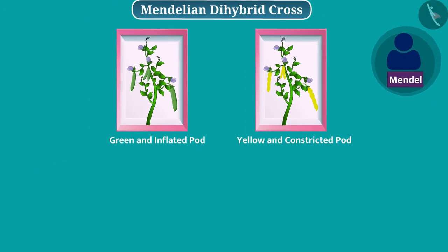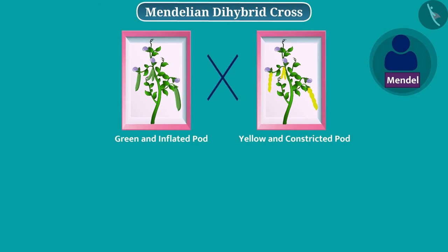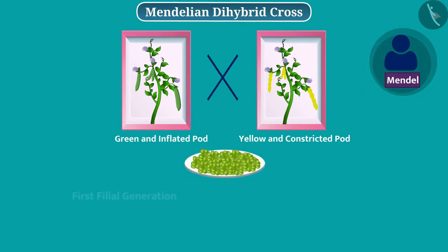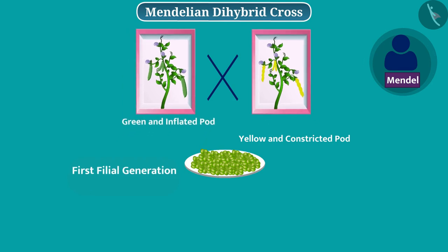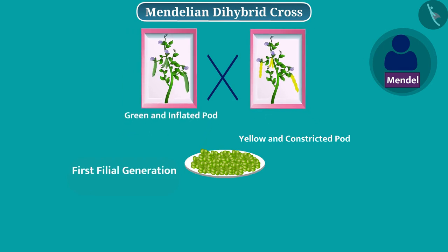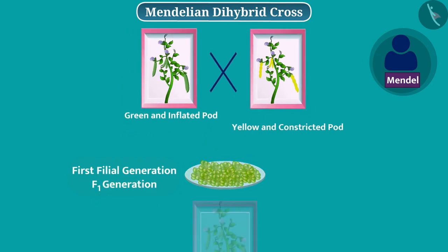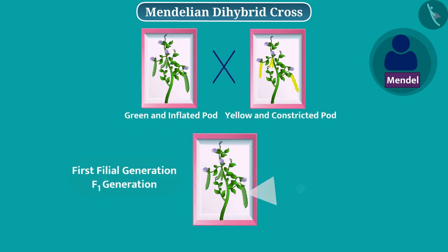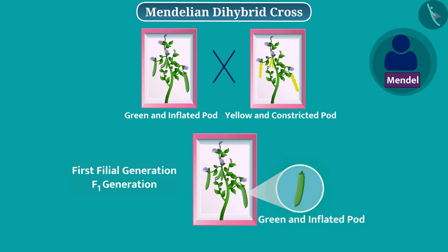By crossing these, Mendel obtained seeds and grew the first filial generation, i.e. F1 generation. The pods of all plants of this generation were green and inflated.